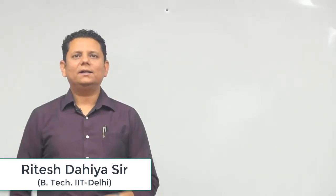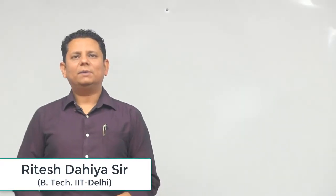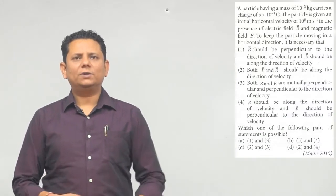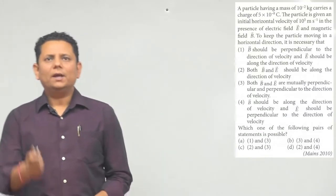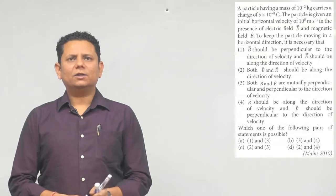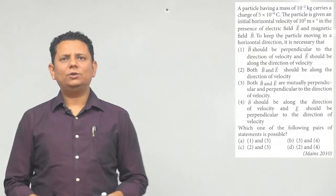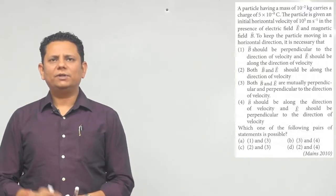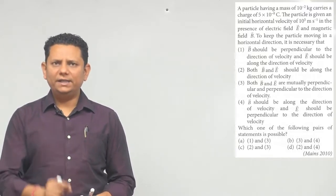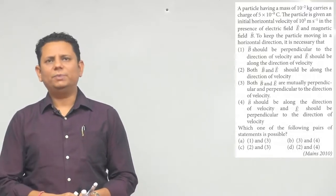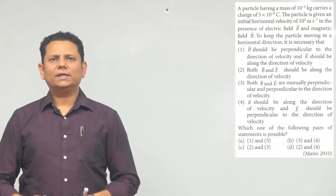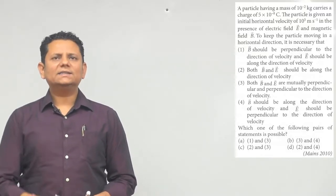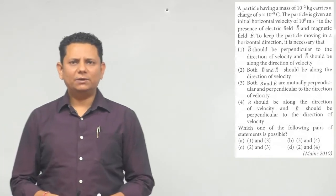A particle having a mass of 10⁻² kg carries a charge of 5 × 10⁻⁸ Coulomb. The particle is given an initial horizontal velocity of 10⁵ m/s in the presence of electric field E and magnetic field B. To keep the particle moving in the horizontal direction, it is necessary that — four options are given.